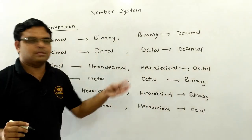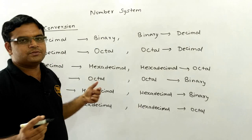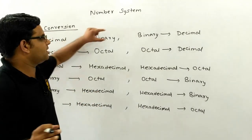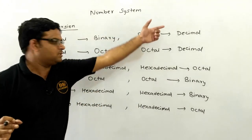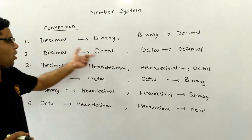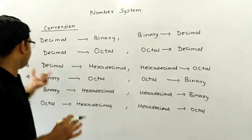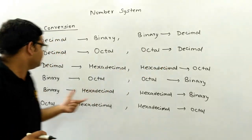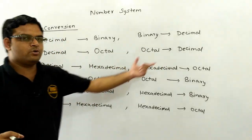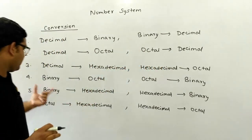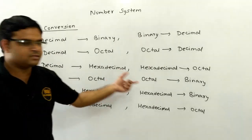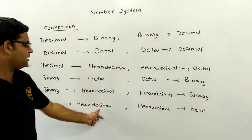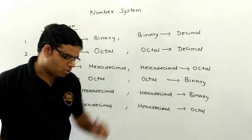These are some of the most important conversions we have to study: decimal to binary and binary to decimal, then decimal to octal and octal to decimal, then decimal to hexadecimal and hexadecimal to octal, binary to octal and octal to binary, binary to hexadecimal and hexadecimal to binary, and octal to hexadecimal and hexadecimal to octal.